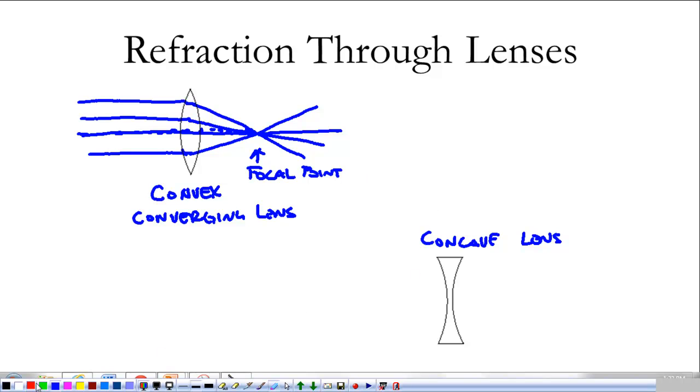A concave lens, on the other hand, is a little bit different. In a concave lens, it still has a focal point, just like the convex lens, but based on its shape, it makes the light spread out. So light coming in parallel is still refracted, but it tends to bend outwards just a little bit. And it bends outwards in such a way that it appears to be coming from a focal point.